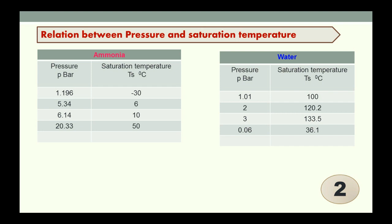If you look at the properties of ammonia, which is a refrigerant, at atmospheric pressure its saturation temperature is minus 30 degrees. It means ammonia liquid boils at atmospheric pressure. This concept also plays an important role in working of vapor compression refrigeration system.